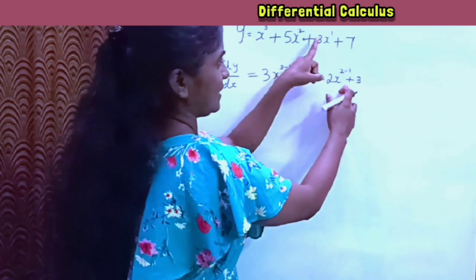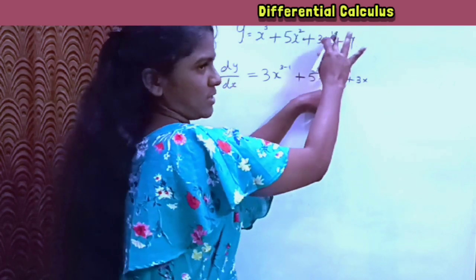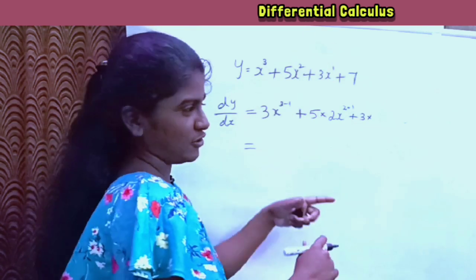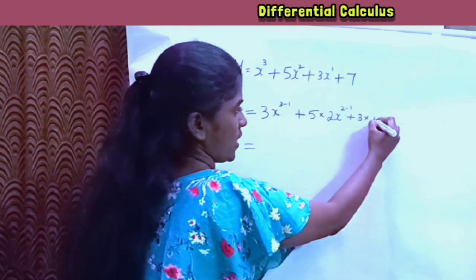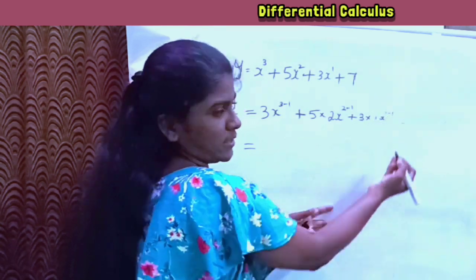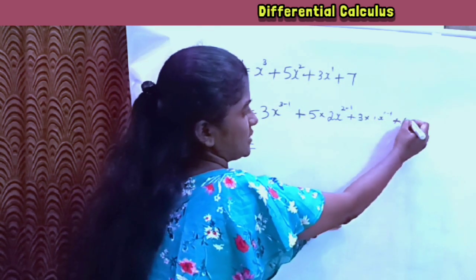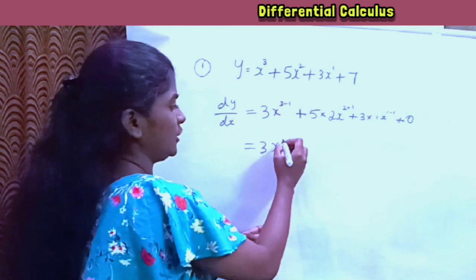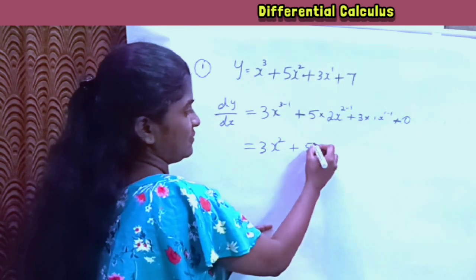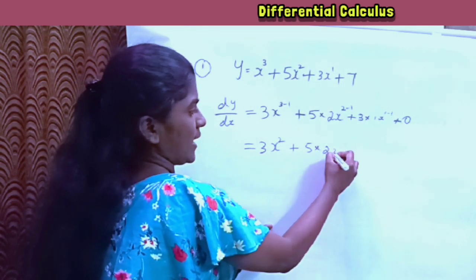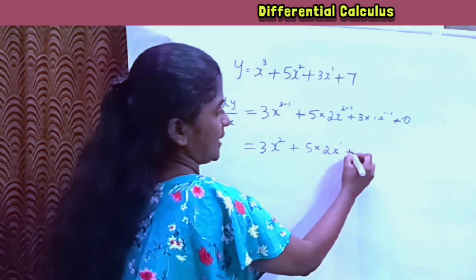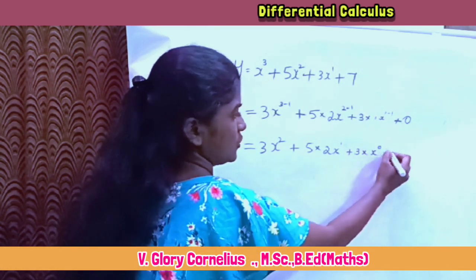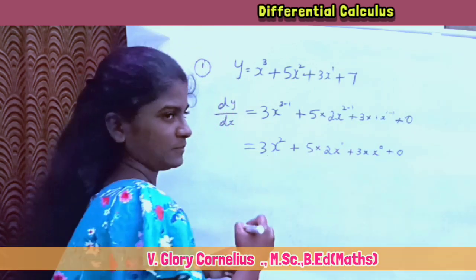Next, plus 3 into x power 1. We differentiate x — so 3 into 1 into x to the power of 1 minus 1, giving x power 0. The last term, 7, is a constant so its derivative is 0. Simplifying: 3 into x power 2 gives 3x square; 5 into 2 gives 10, so 10x power 1; 3 into 1 into x power 0; and the constant 7 gives 0.